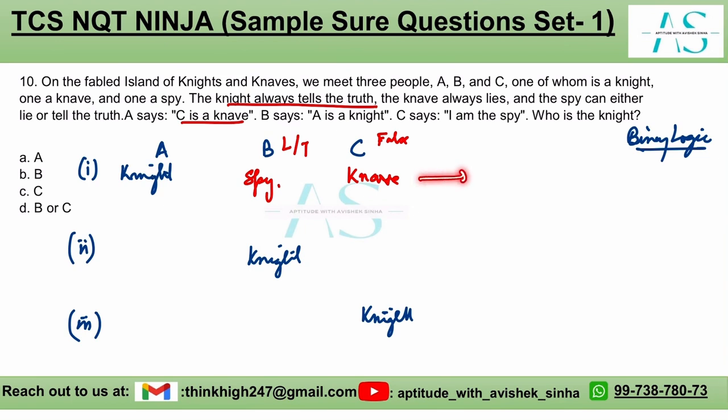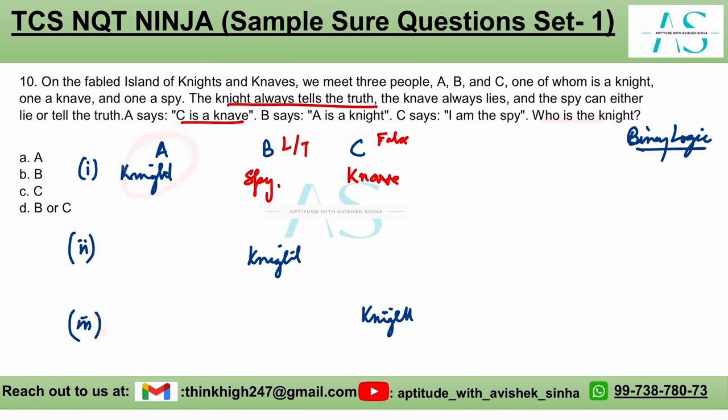B says 'A is the knight' — as the spy, B can tell the truth or lie, so this is also consistent. This case is possible. In this scenario, A is the knight, B is the spy, and C is the knave.